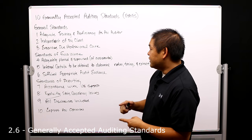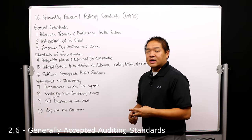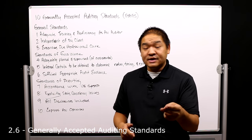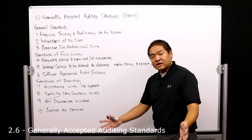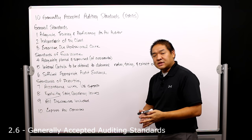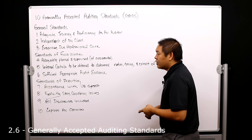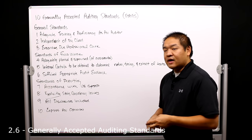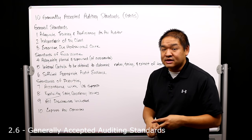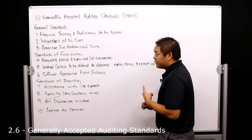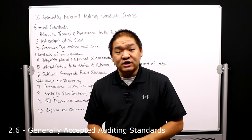For our General Standards: we have adequate training and proficiency as an auditor on the engagement; we are independent of the client in both fact and appearance; and we exercise due professional care. For the Standards of Fieldwork: we have adequately planned and supervised all assistants; we obtained information about internal control to determine the nature, timing, and extent of the evidence and tests; and we obtain sufficient appropriate audit evidence to corroborate all management assertions being tested.